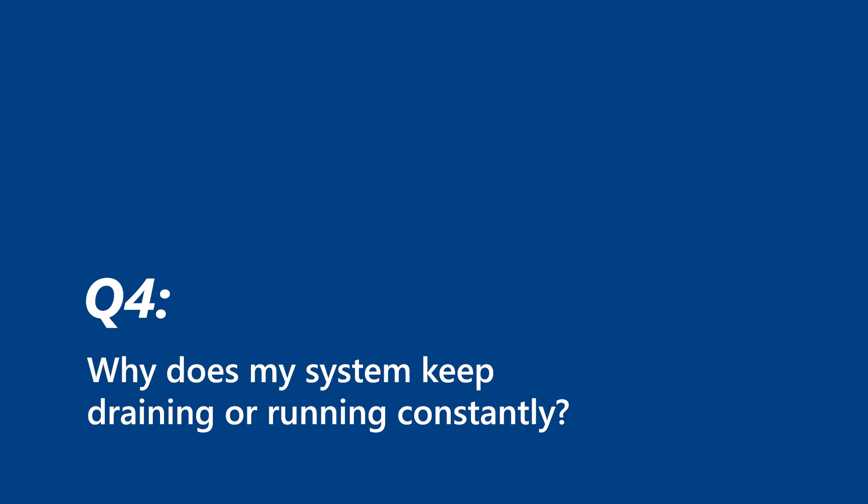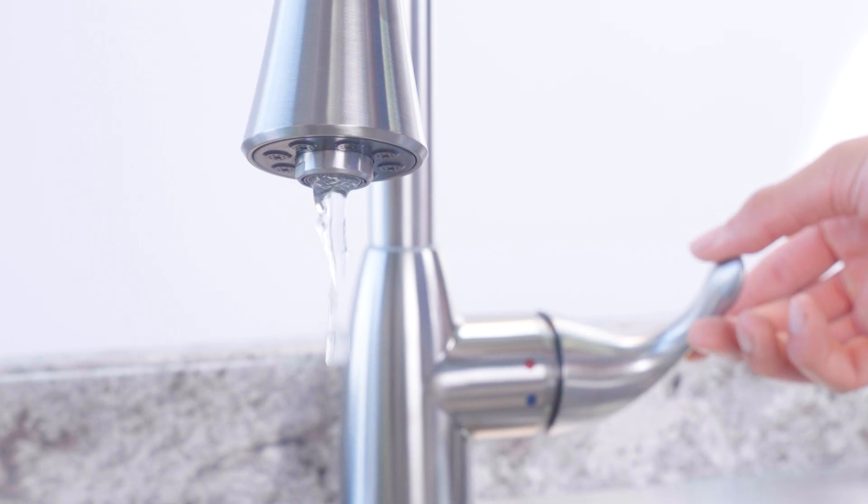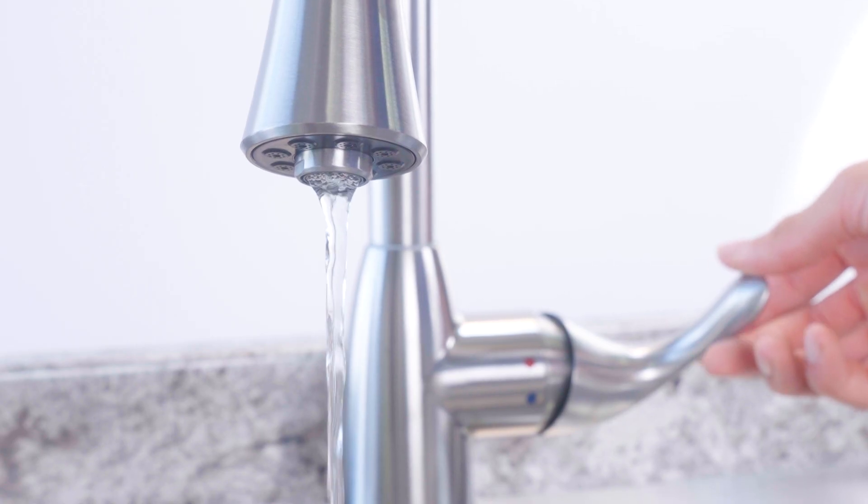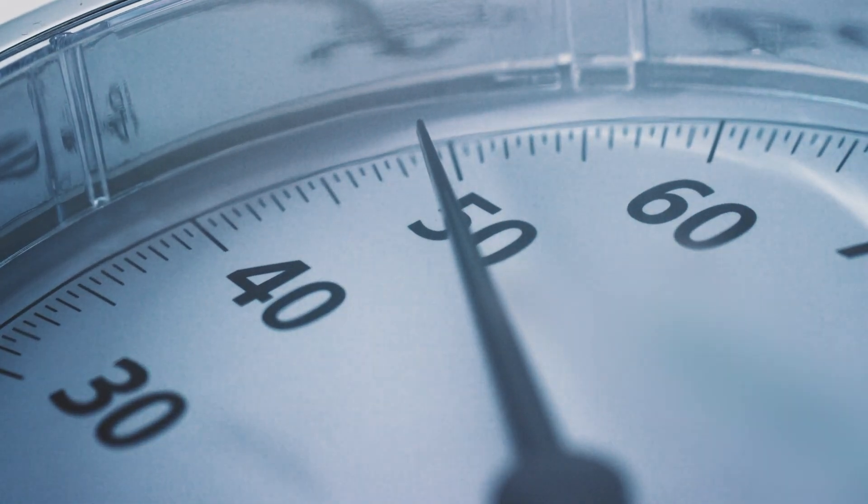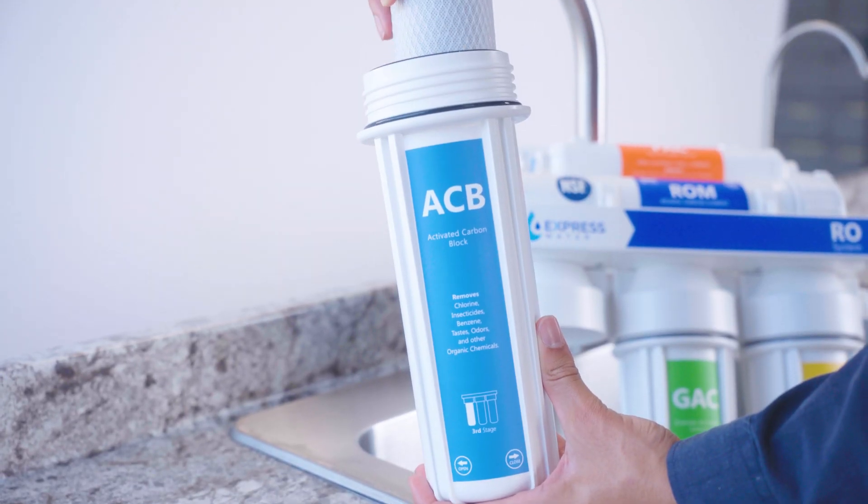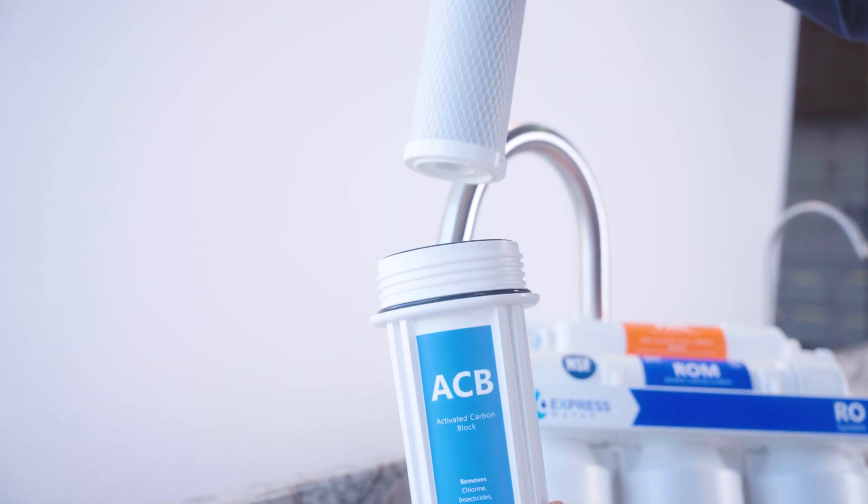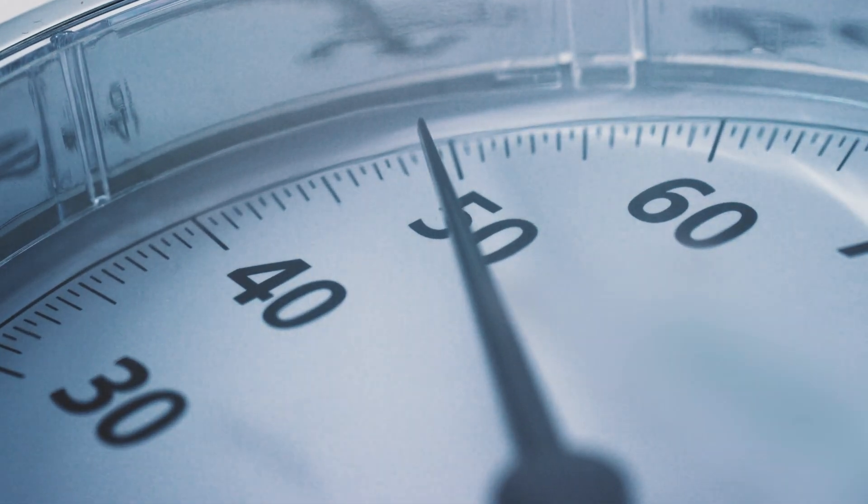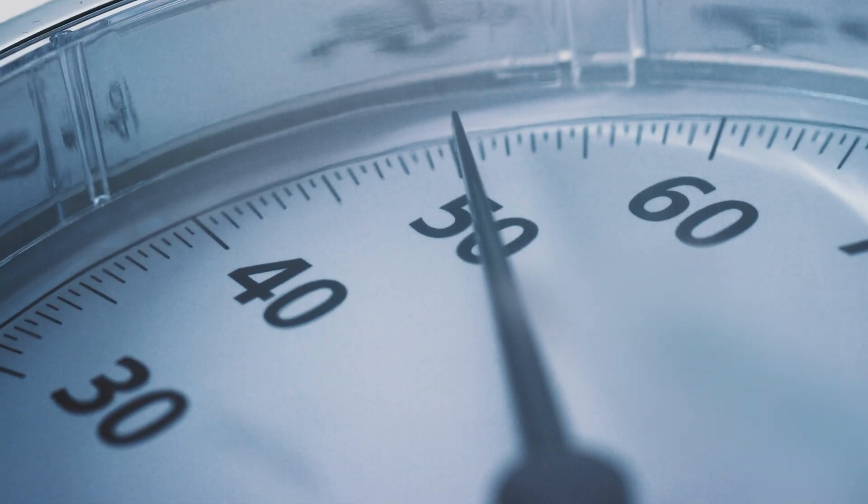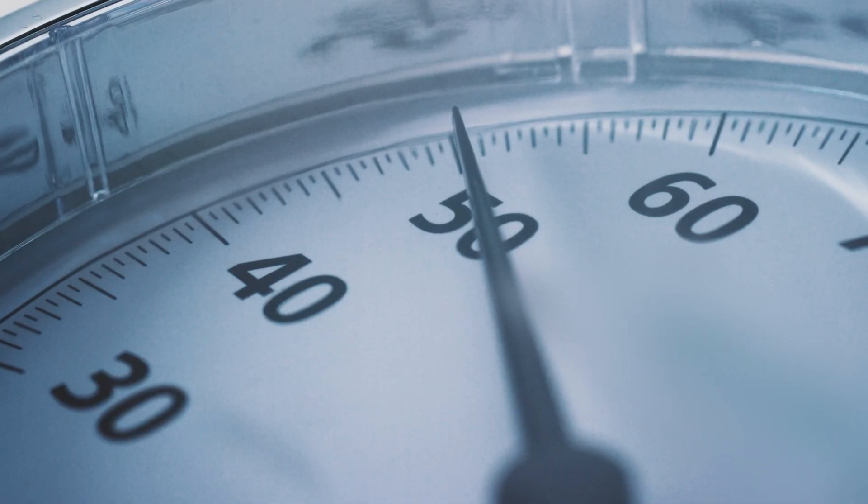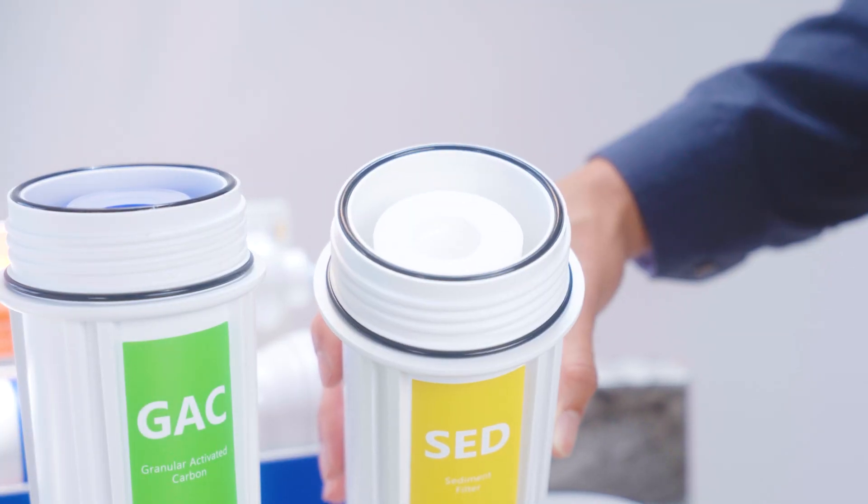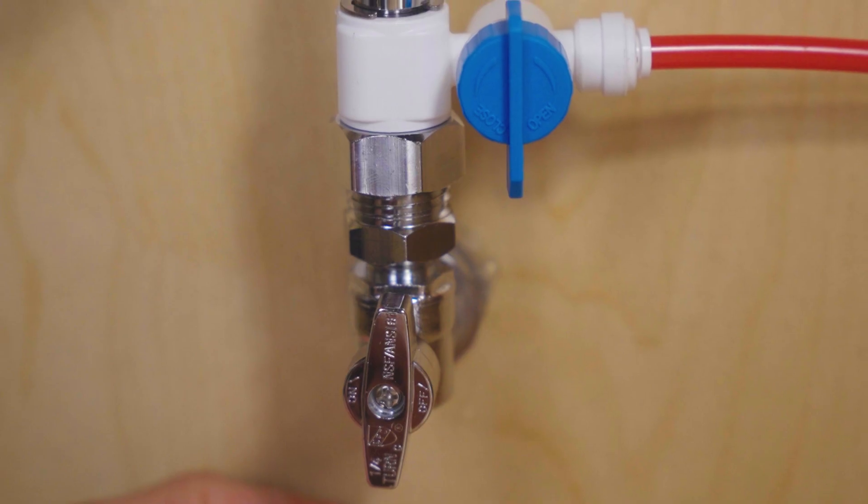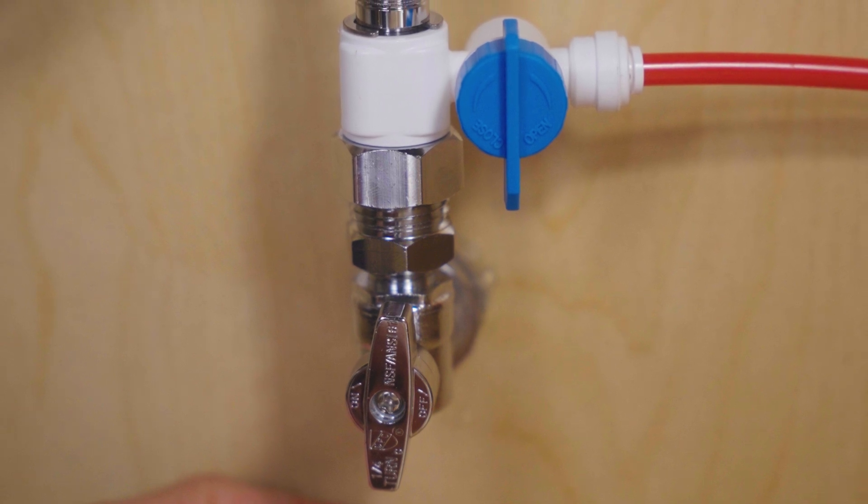That can happen if your incoming water pressure is too low, under 45 PSI, worn out pre-filters or RO membrane, or the shutoff valve was installed incorrectly. To fix, use a pressure gauge. If it's low, a booster pump may help. Change filters if they're older than 6 to 12 months. Double check the shutoff valve is in the right position.